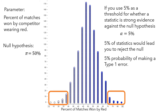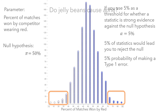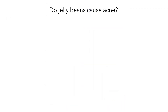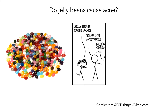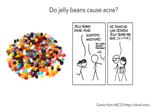Let's think about what this really means. Suppose you want to know whether jelly beans cause acne. Concerned that jelly beans cause acne, you send scientists to investigate. They reluctantly agree to do so, and after analyzing their data, they get a p-value that is larger than 5%, so they don't reject the null hypothesis that jelly beans don't cause acne.